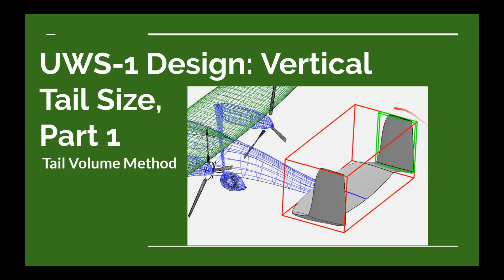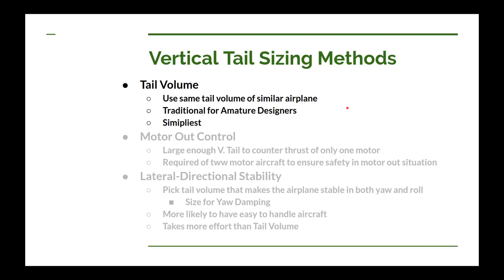Once I get the vertical tail size figured out, I can start working on aerodynamic loads for that tail and then start making a rudder — and of course making videos about the whole process. This is part one of a multi-part series, at least two parts, maybe three or four. Those parts will cover different ways of coming up with the surface area for the vertical tail. There are at least three methods for determining what the surface area should be.